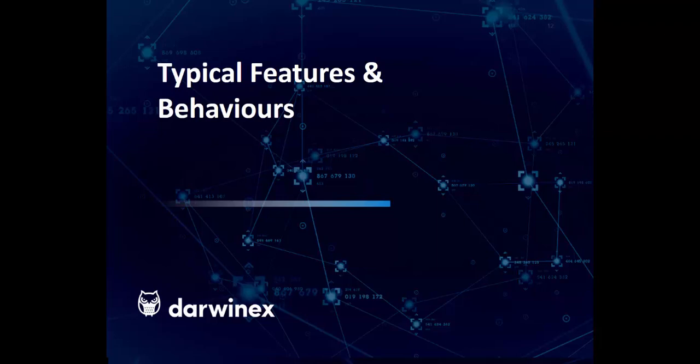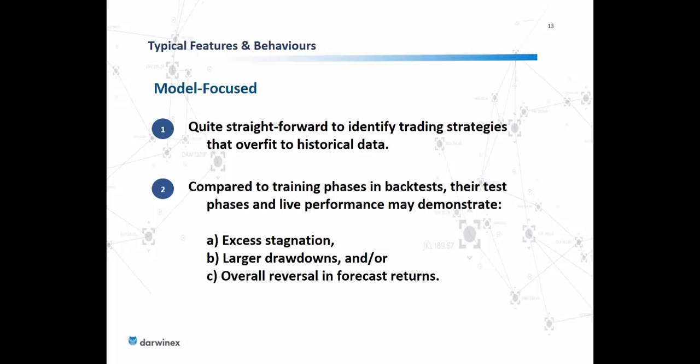Typical features and behaviors of model-focused strategies are next. It's quite straightforward to identify trading strategies that overfit historical data — the point of inflection, stagnation in returns, and eventual reversal from positive to negative. Compared to the training phases in backtests, their test phases and live performance may demonstrate excess stagnation, larger drawdowns than expected from backtests, and overall reversal in forecast returns.